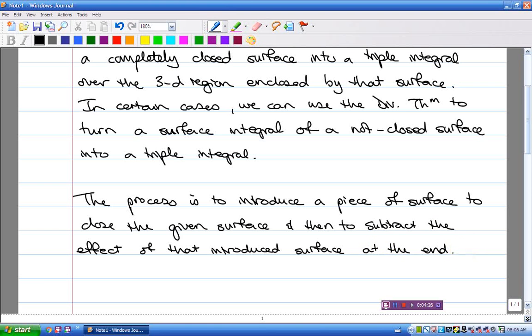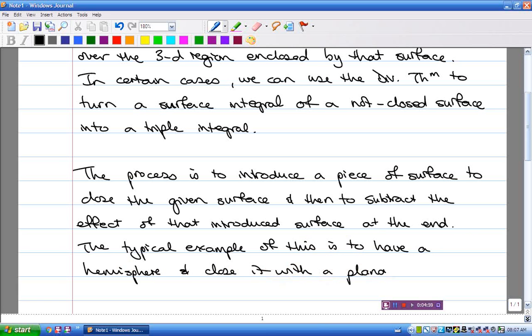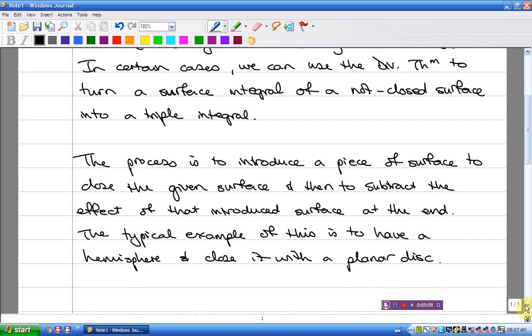The typical example of this is to have a hemisphere and to close it with a planar disc. There are other examples, but that's the typical one. The typical example is to have a hemisphere and close it with a planar disc, a piece of plane in the shape of a disc, to sort of plug the open part of the hemisphere. And I'm going to demonstrate with a couple of examples.